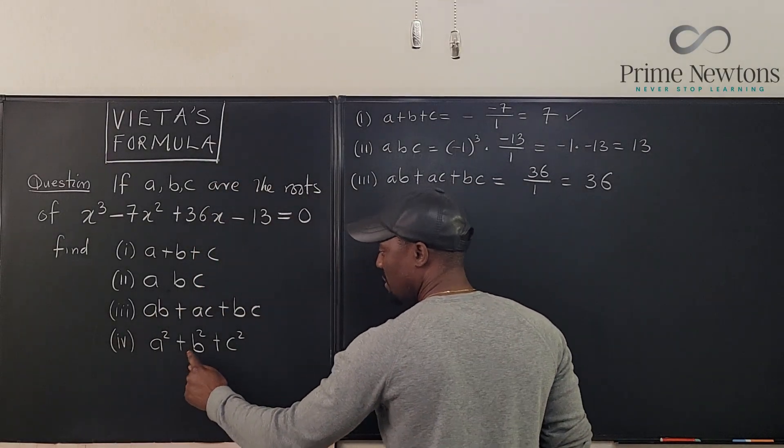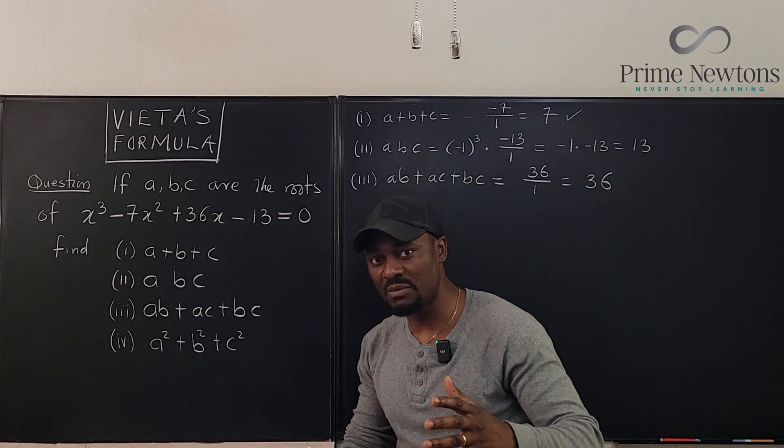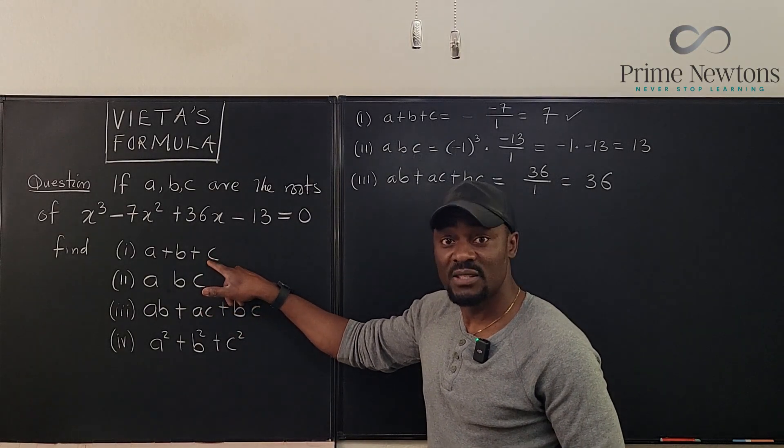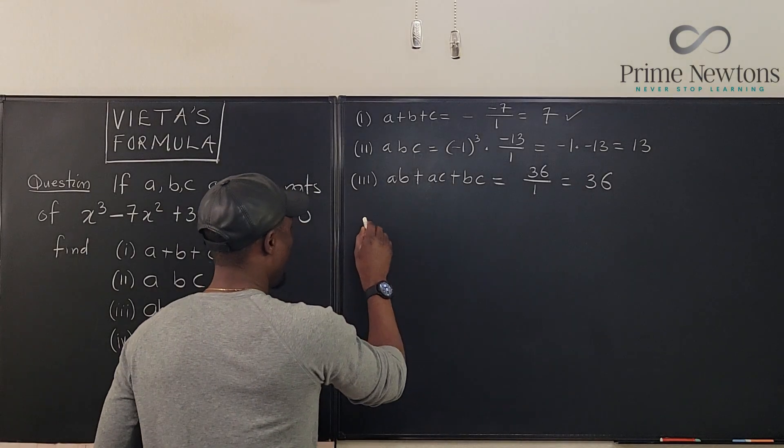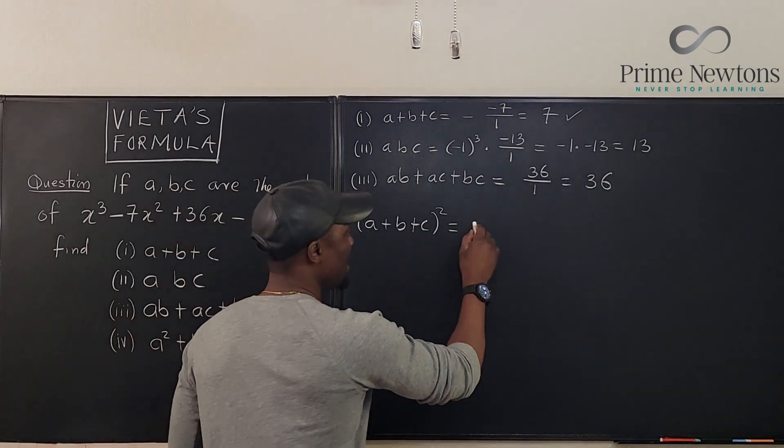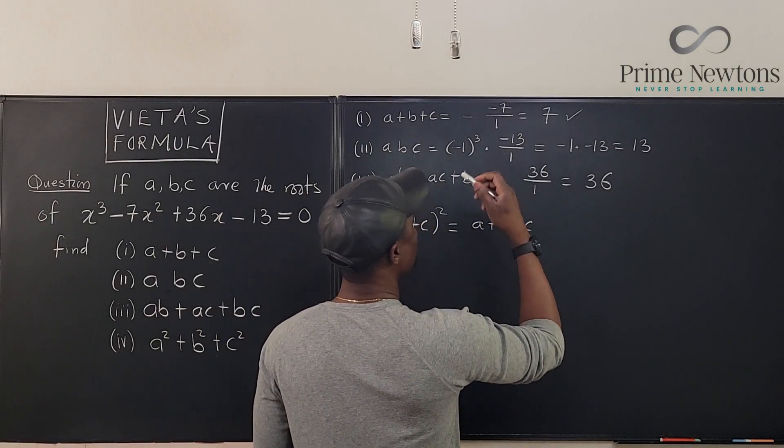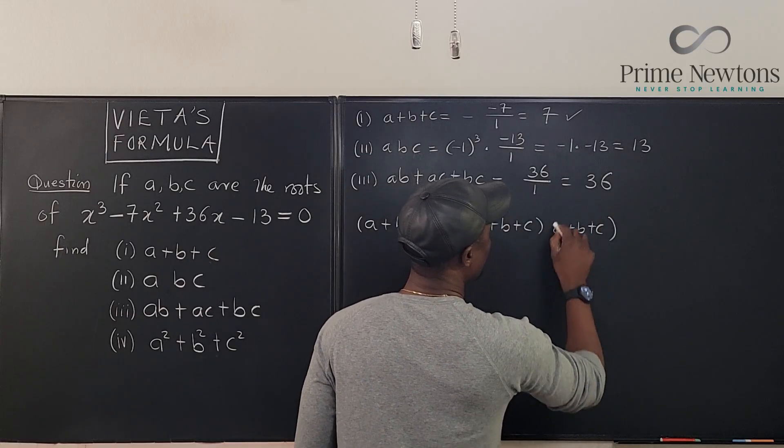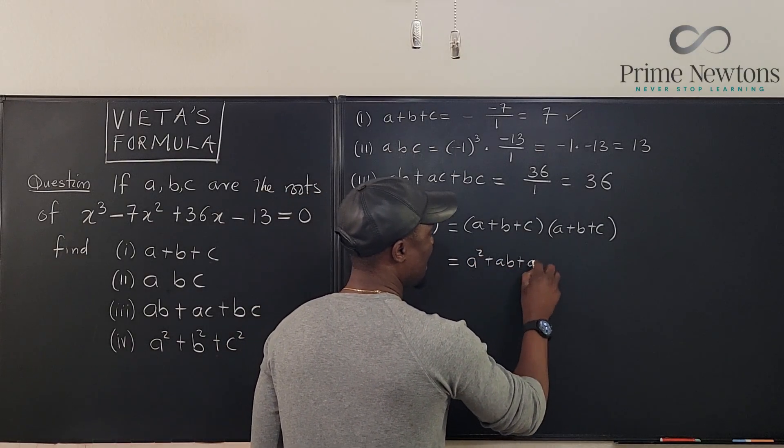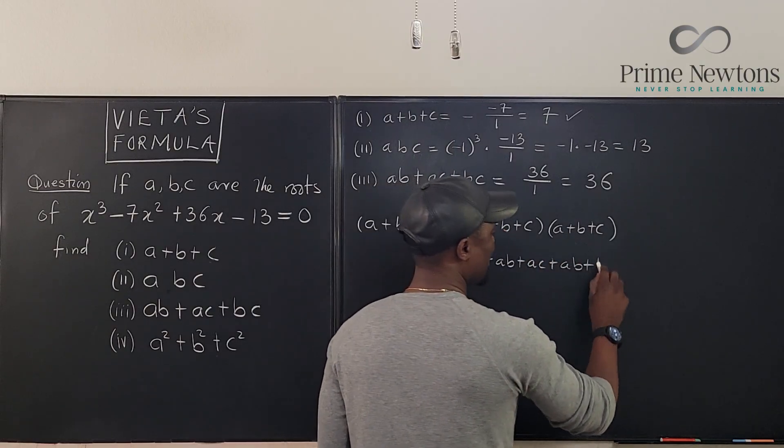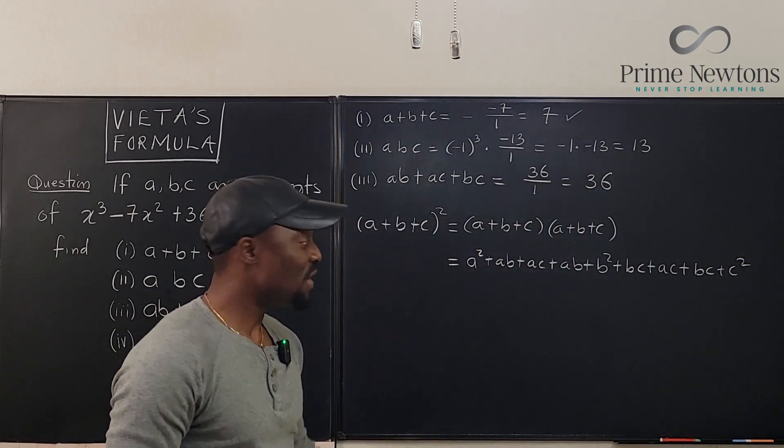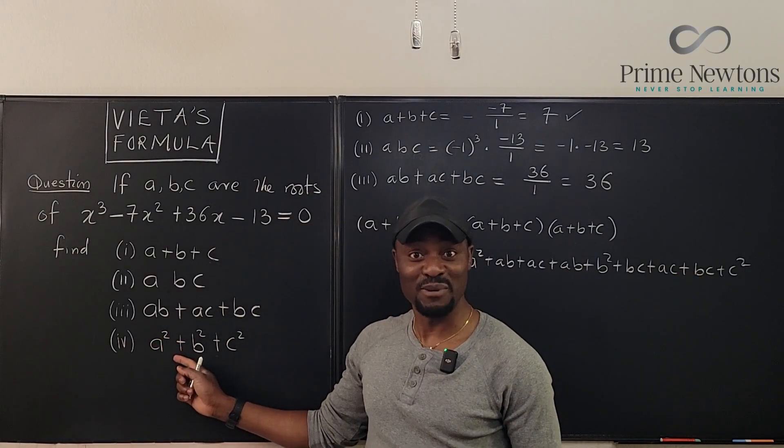Now the last one, A squared plus B squared plus C squared. This one is a little bit of a problem because we don't have a formula for the squares, but we can always generate it. What do we do? Go here and manipulate the sum. You're going to get something like this. Let's look at it. Now we know that A plus B plus C squared is going to be, if you square this, it's going to be A plus B plus C times A plus B plus C. If we multiply this out, see what we're going to get. We're going to get A squared plus AB plus AC plus AB plus B squared plus BC plus AC plus BC plus C squared. That's what you need. And from here, we can get all the three squares that we're looking for in this problem.